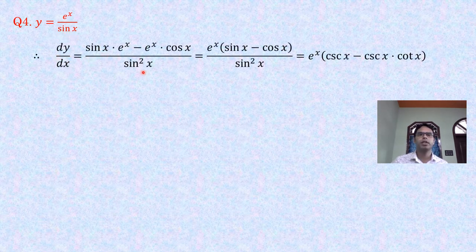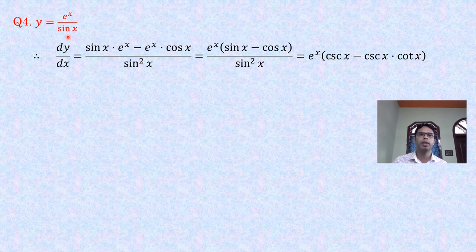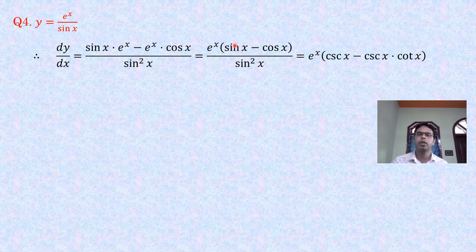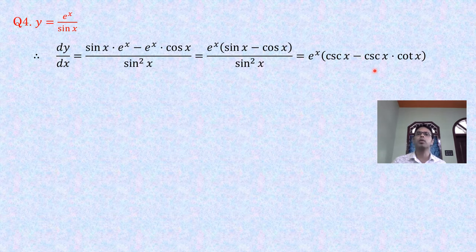Problem 4: y = e^x / sin x. Using the quotient rule: dy/dx = [sin x · e^x − e^x · cos x] / sin²x = e^x(sin x − cos x)/sin²x, which simplifies to e^x(cosec x − cosec x · cot x).